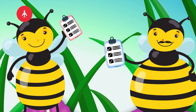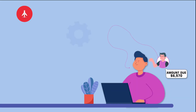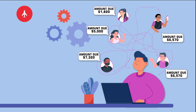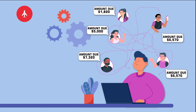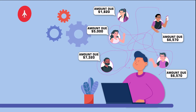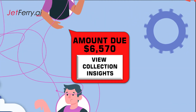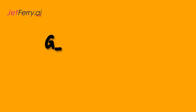Is your manual assignment lacking updated data and often resulting in overlapping your collection resources, causing delays and under-utilization of resources? Can this be done better and quicker? Want to fix it now? Talk to us.